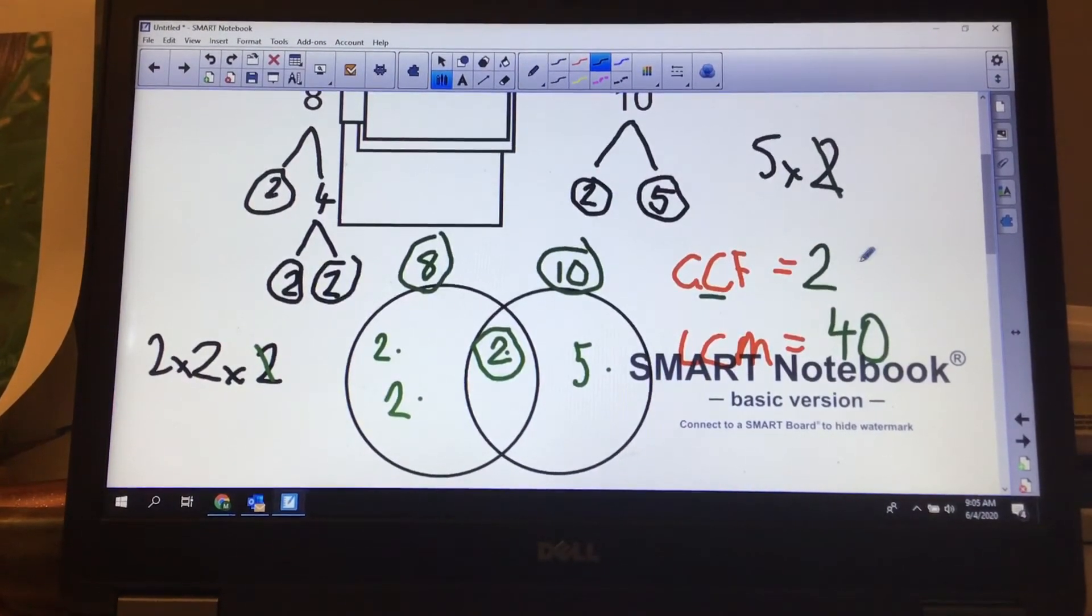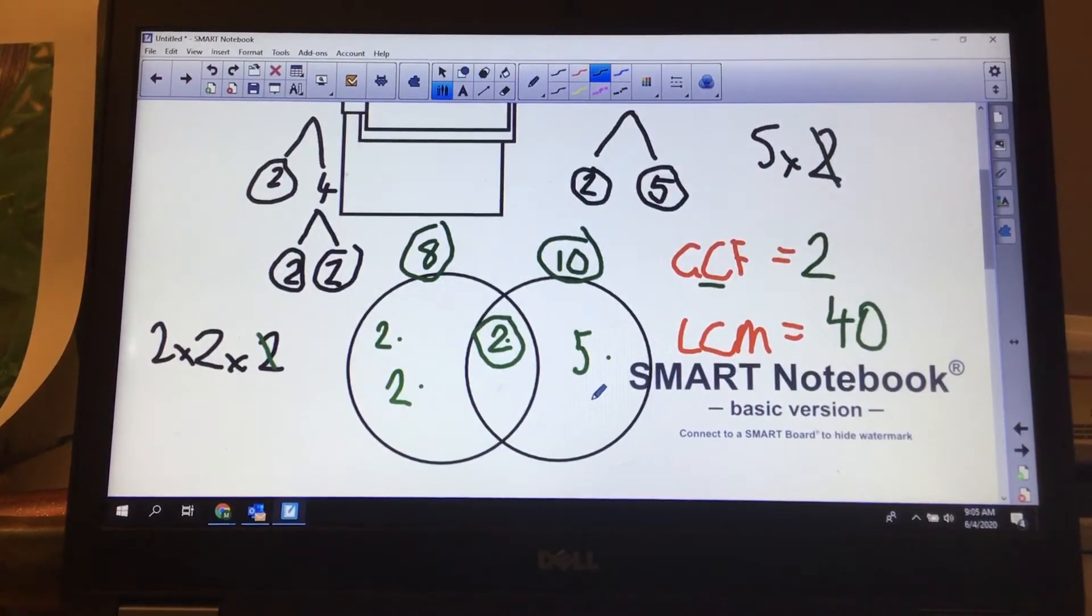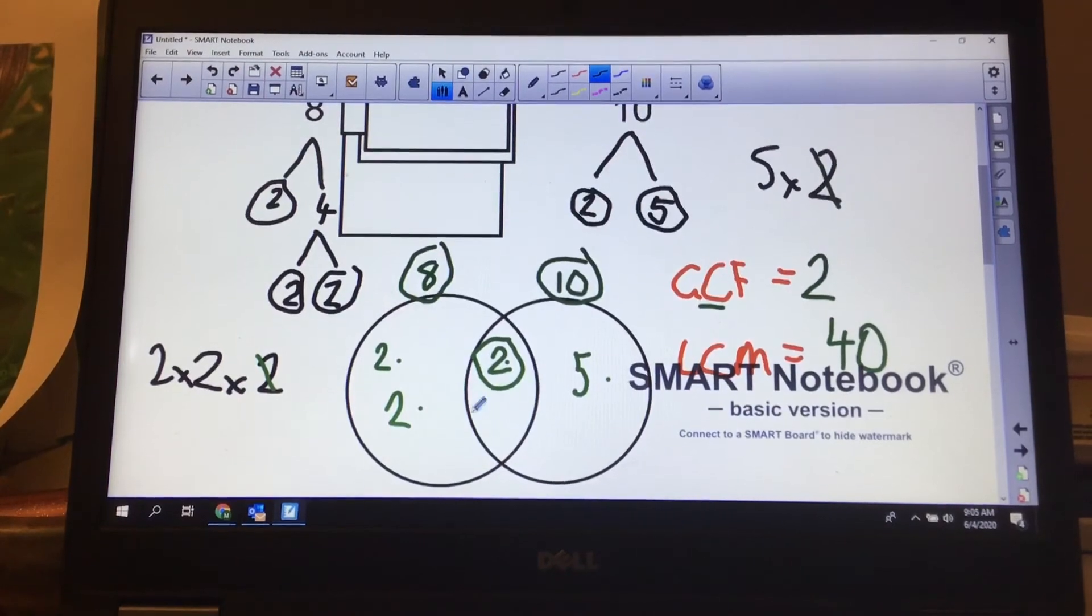So my greatest common factor is 2, my least common multiple is 40. It's way easier than doing it the old-fashioned way with factor rainbows and lists.